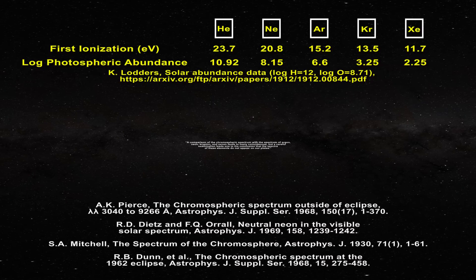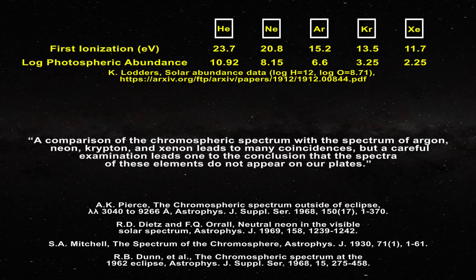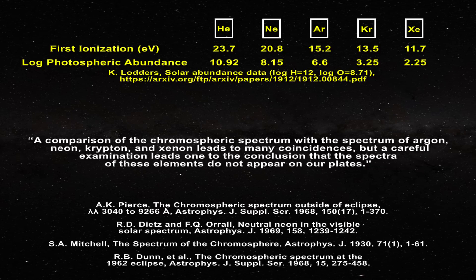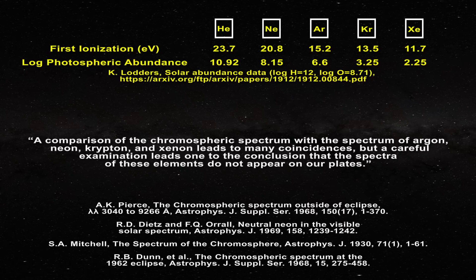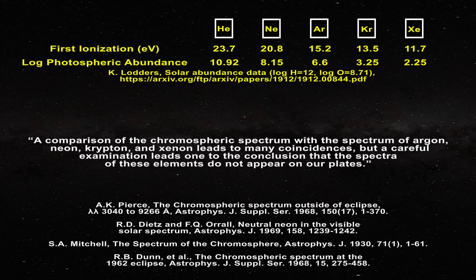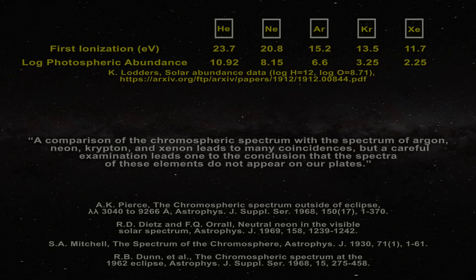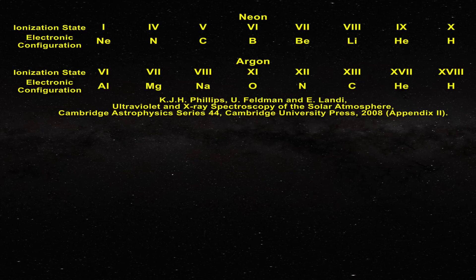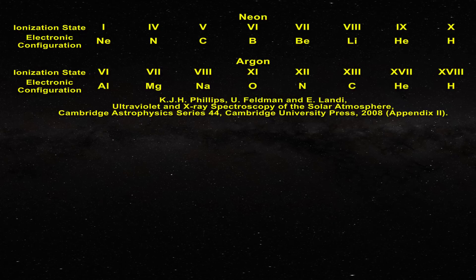This is how Pierce describes the situation relative to the chromospheric spectrum: a comparison of the chromospheric spectrum with the spectrum of argon, neon, krypton, and xenon leads to many coincidences, but a careful examination leads one to the conclusion that the spectra of these elements do not appear on our plates. Powerful lines from neon and argon in these states, however, have been observed in the emission lines in the solar corona, as one can learn in the footnoted text.